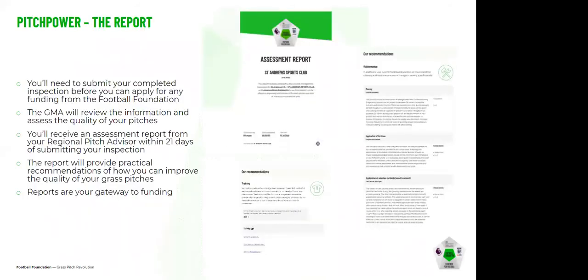Once you've carried out your assessment via the Pitch Power app and submitted it — which must be done before you can receive any funding — the Regional Pitch Advisors from the GMA will review the information you've submitted and assess the quality of your pitches. You will receive an assessment report within 21 days of submitting your inspection. The report provides practical recommendations on how you can improve the quality of your grass pitches, and those reports are very much the key to getting the funding going forward.